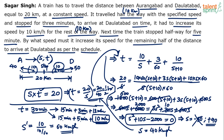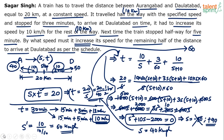So the train has to run at 60 km per hour for the second half. The question asks for the increment in speed. The new speed is 60 and the original speed was 40, so 60 minus 40 equals 20 kilometers per hour. The speed must increase by 20 km per hour.